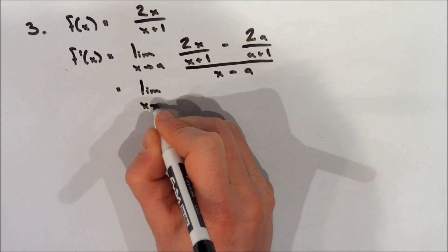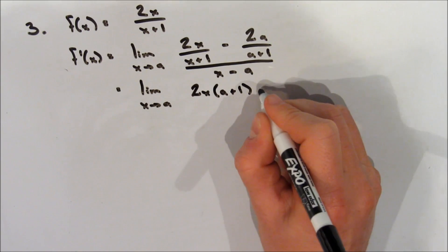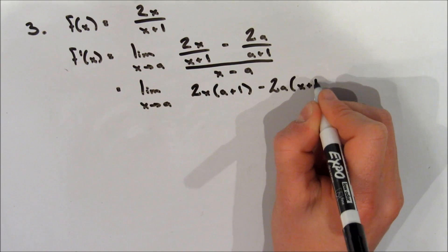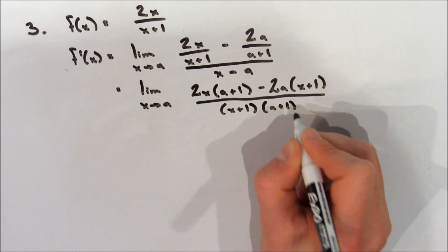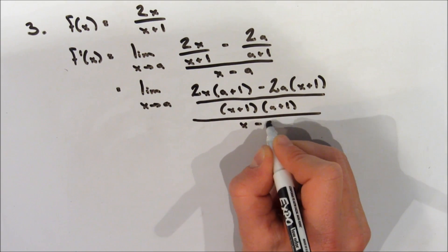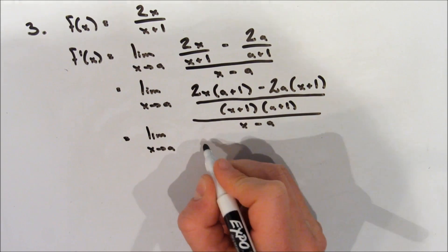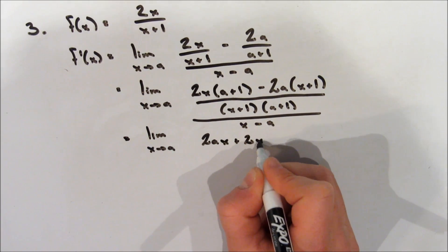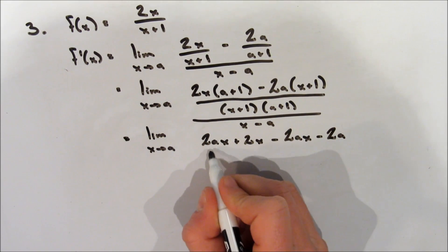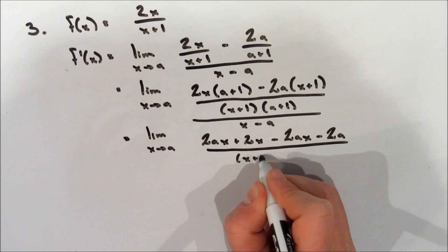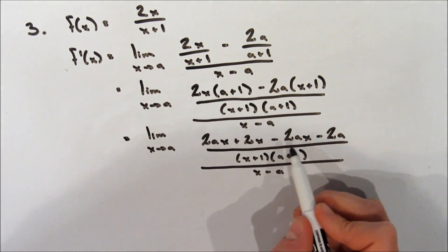On the next line, we're going to continue with the limit as x approaches a to stay consistent. We're going to look for a common denominator, so we're going to multiply 2x by (a plus 1), then subtract 2a multiplied by (x plus 1). Now that's all over (x plus 1) multiplied by (a plus 1), and this whole fraction is over x minus a. We're going to expand the terms to simplify: 2ax plus 2x minus 2ax minus 2a, over (x plus 1)(a plus 1), all over x minus a.